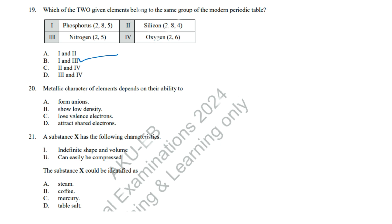Question 20: Metallic character refers to the ease of losing valence electrons. Correct answer: C, Lose valence electrons. Question 21: Steam is a gas, which has indefinite shape and volume and is easily compressed. Correct answer: A, Steam.